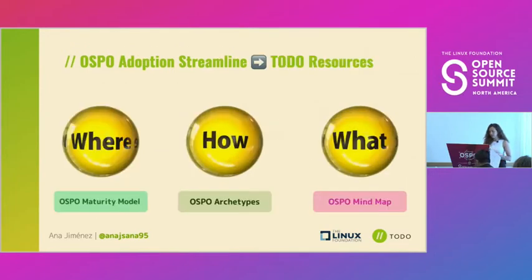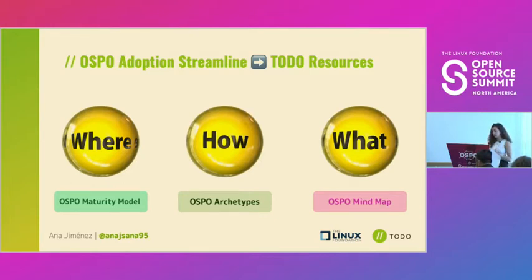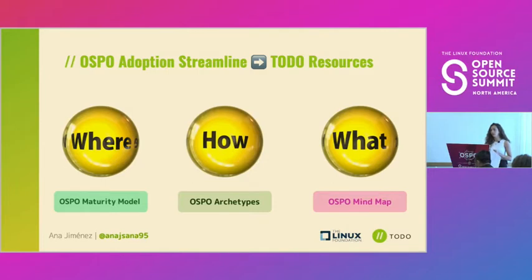There are some Tudor resources that can help streamline this. To answer the 'where' question, the OSPO maturity model can help. To answer the 'how' question, OSPO archetypes might be useful, since they identify patterns of different OSPOs and how OSPOs can be built. And for the 'what' question, the OSPO mind map can help you identify all the different responsibilities and which ones are most important for your company based on your organization's goals. We'll go through them one by one.